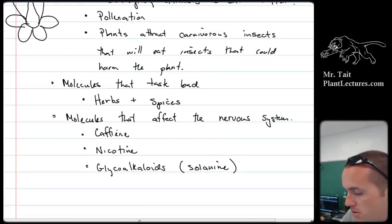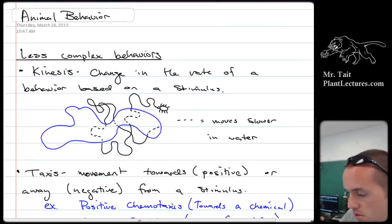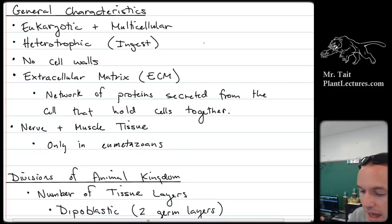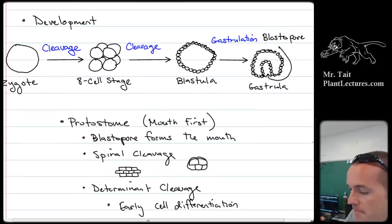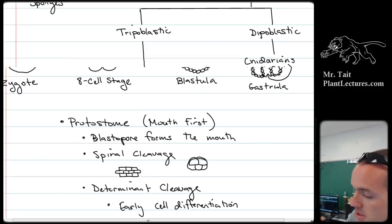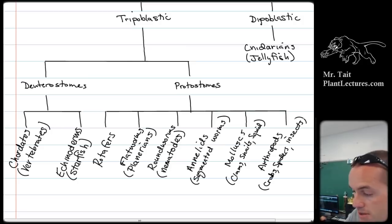Plants produce secondary compounds to avoid being eaten — most of the time they don't want to get eaten, but sometimes they do if it's in their fruits, so those are supposed to taste good. Animal stuff — all animals are eukaryotic and multicellular and have no cell walls. The eumetazoans have nerve and muscle tissue. We divide them based on what their blastopore forms into. If this pore forms the mouth, that's called a protostome. If this pore forms the anus, that's called a deuterostome. Deuterostomes are the chordates — vertebrates like you and me — and echinoderms like starfish. Protostomes are everything else.